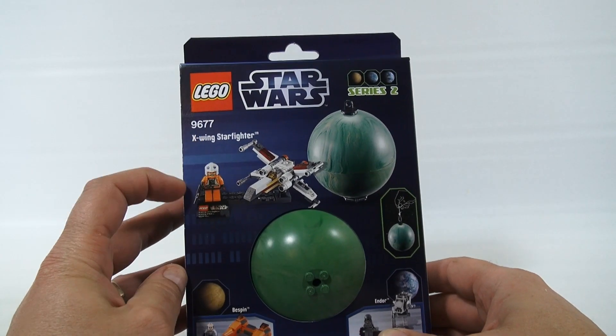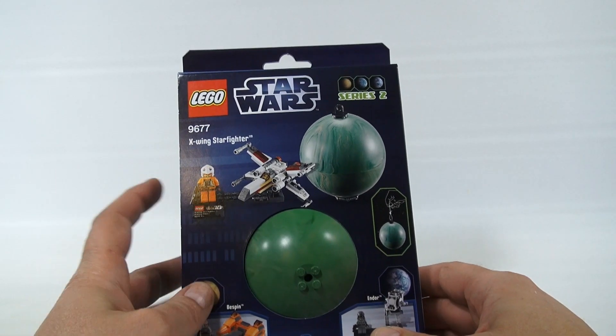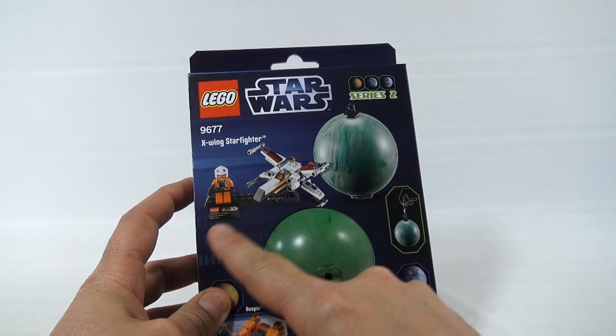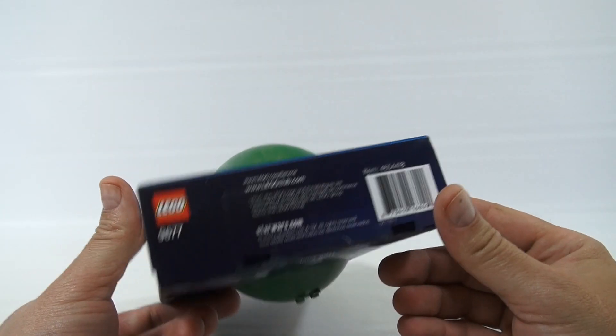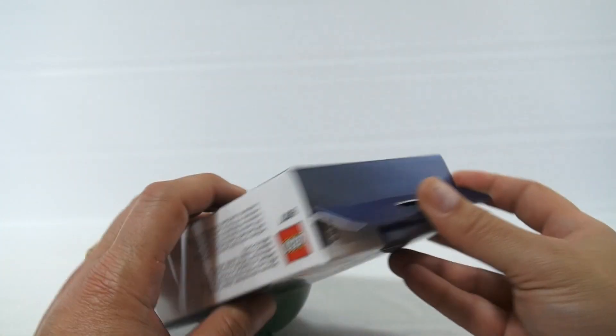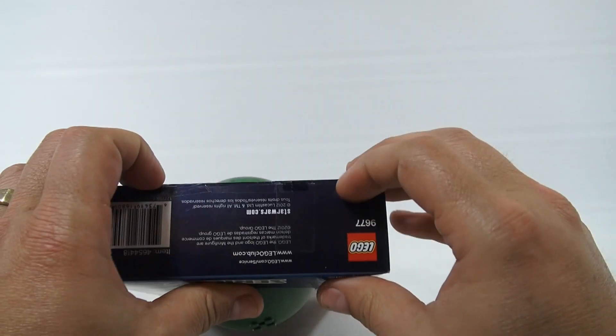So we get the X-Wing Starfighter, we also get the pilot, and then the planet. There's a display stand that comes with this, and then the planet which you can hang. I hang with that, I'm cool with that, let's get in here.